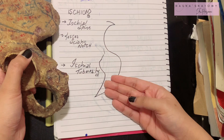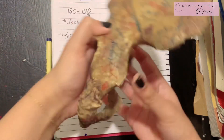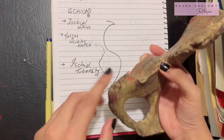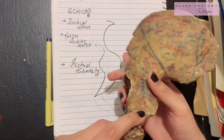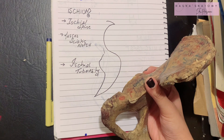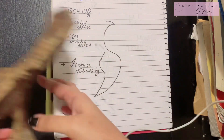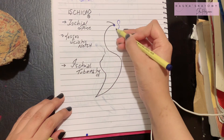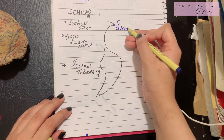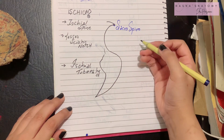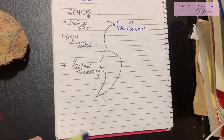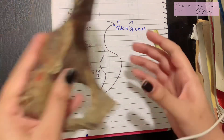For ease, attachments are divided into three parts: the ischial spine, the sciatic notch, and the ischial tuberosity. At the ischial spine, there is a very important ligament known as the sacrospinous ligament, extending from the sacrum to the ischial spine.